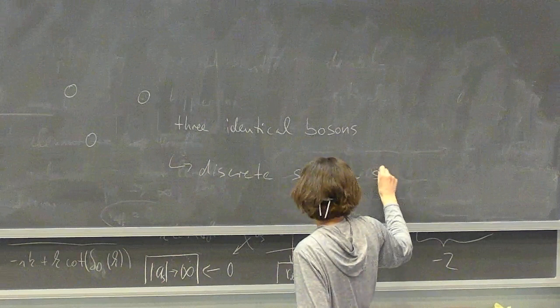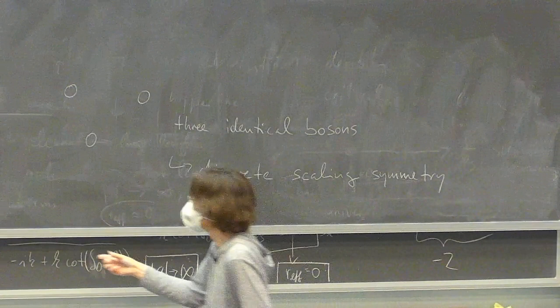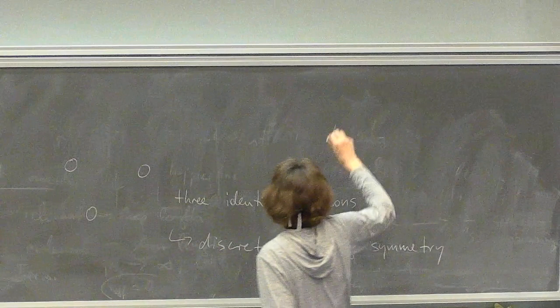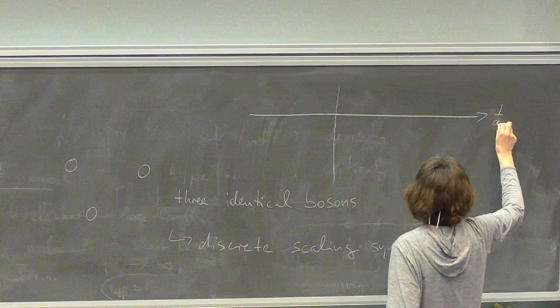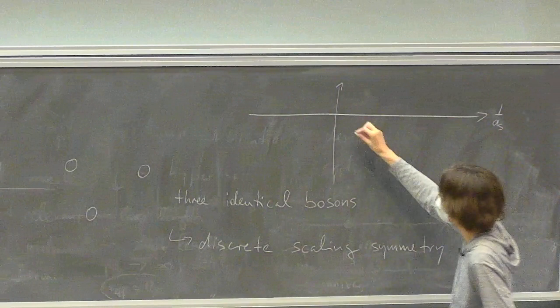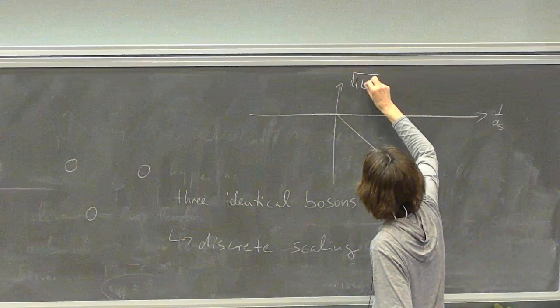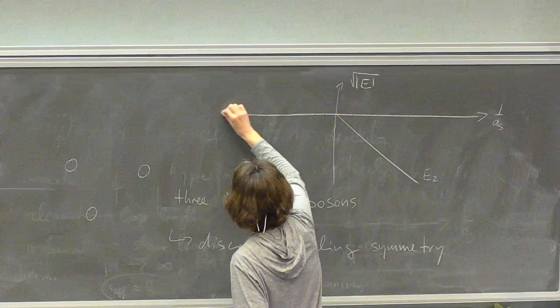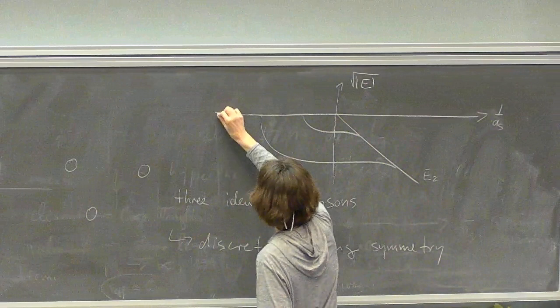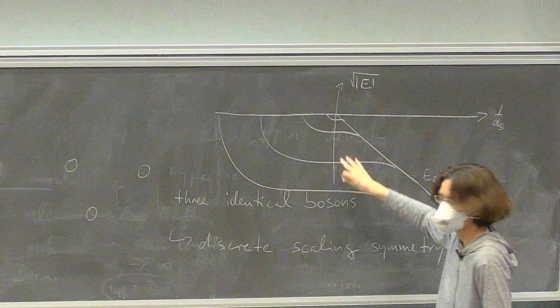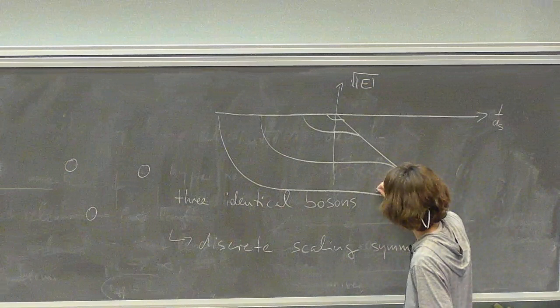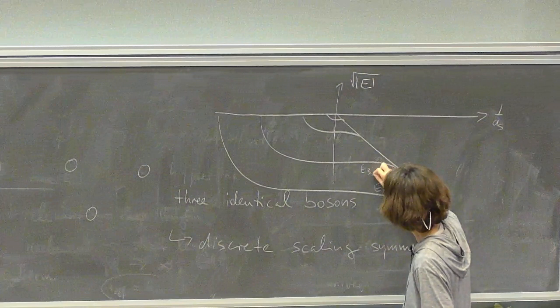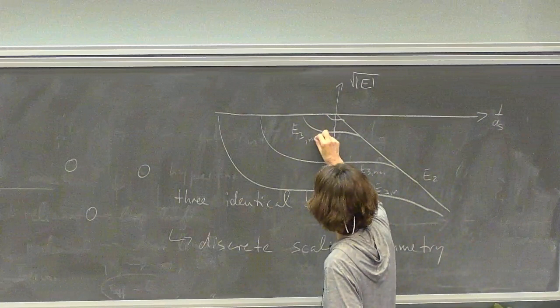Highlighting a couple of interesting aspects: if we have the S-wave scattering length — plotting the square root of the energy — we have a two-body bound state here, and due to this discrete scaling feature, we have an infinite sequence of three-body bound states, known as Efimov states: E_{3N}, E_{3N+1}, E_{3N+2}, and so on.